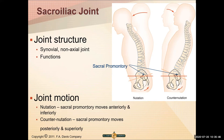The motion at the SI joint involves nutation versus counter-nutation. Nutation is when the sacral promontory moves anteriorly and inferiorly. Counter-nutation is when the sacral promontory moves posteriorly and superiorly. Typically when you're bending over, you're going into nutation; when you're leaning back, you're going into counter-nutation.